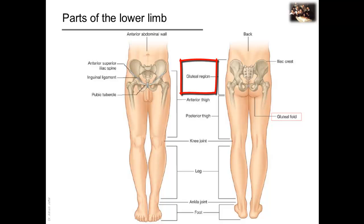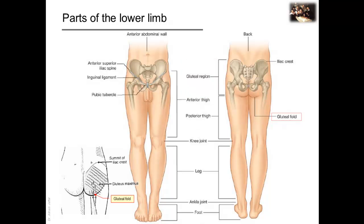The gluteal region is posterolateral and extends between the iliac crest and the gluteal fold of skin. This fold is produced by the attachment of the skin to the deep fascia. The extent of the gluteal region from the iliac crest superiorly to the gluteal fold inferiorly should be remembered when administering intramuscular injections in the gluteal region. These injections should be given in the upper lateral quadrant of the gluteal region to avoid damage of the neurovascular bundle. Some people restrict the area to the most prominent part. This is wrong and dangerous.